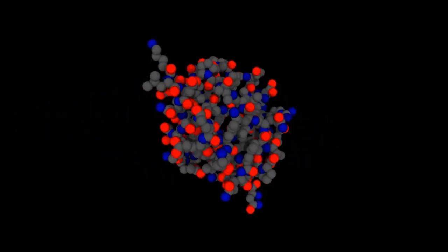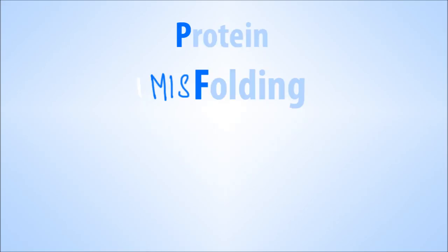But what happens if a protein does not assume the 3D structure that it should? What if it misfolds and becomes an entirely different structure altogether? This is one of the reasons why understanding protein folding is such an important topic.